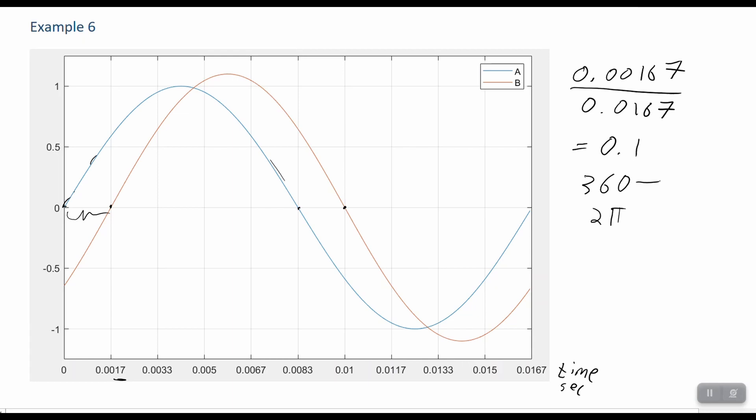So 0.1 of that, one tenth of 360 degrees is 36 degrees. So A is leading B by 36 degrees or by 0.2 pi radians.